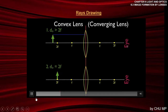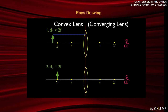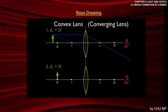The first ray is the parallel ray — it enters the lens parallel to the principal axis. When it comes out of the lens, it's refracted so that it goes through the focal point. I call this one 'parallel-F.' The second ray enters through the focal point and comes out parallel to the principal axis — 'F-parallel.' The third ray goes straight through the center of the lens without bending. The image is located where those three rays intersect.